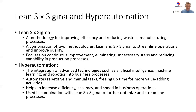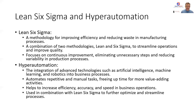Hyperautomation is a technology coined by Gartner in 2019. It's an integration of advanced technologies — a bunch of advanced technologies linked together. These technologies have been around since about 2001–2003, and people started using them in conjunction with each other. The advanced technologies used together include artificial intelligence, machine learning, robotic process automation, and business process automation, in order to automate repetitive tasks, freeing up an employee's time to focus on more value-adding activities. It helps increase efficiency and accuracy, improves your speed of business, and when used in combination with Lean Six Sigma, it will further optimize and streamline the process.